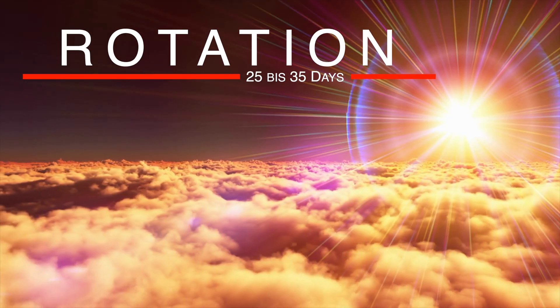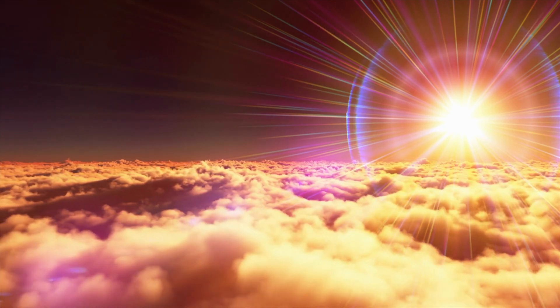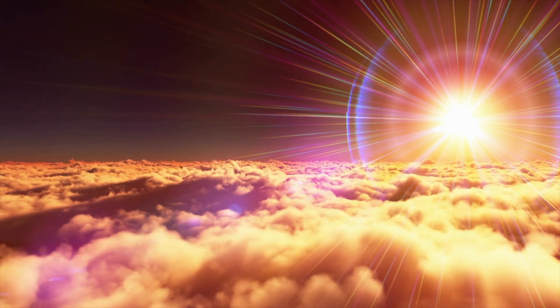The Sun rotates once on its own axis about every 25 to 35 days. The rotation speed at the equator region is higher than at the poles.